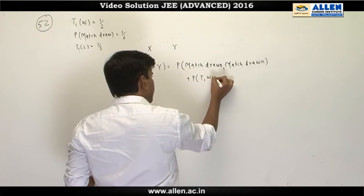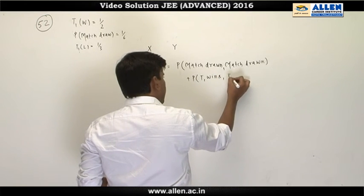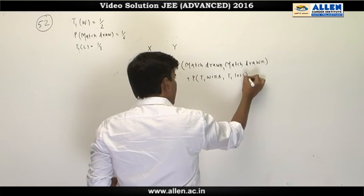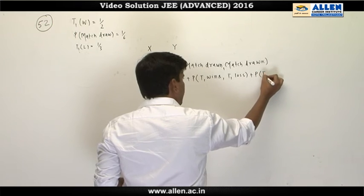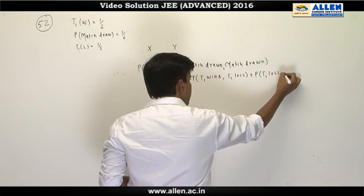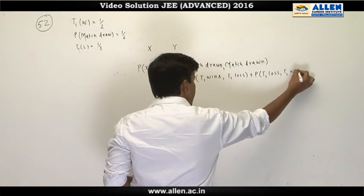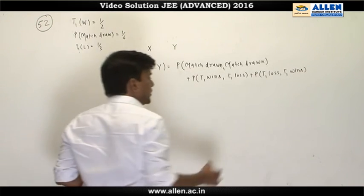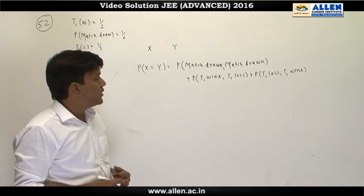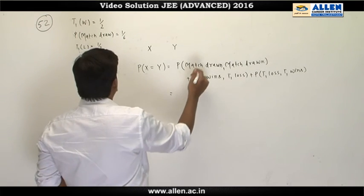Second we can see T1 wins, T1 loss, or the third case can be T1 loss and in the second game T1 wins. So in all the cases both the teams will score the same points. Match drawn,